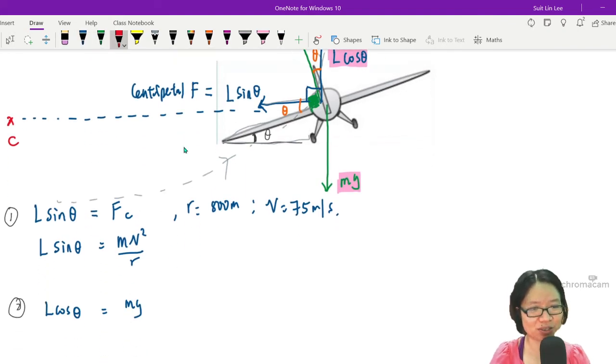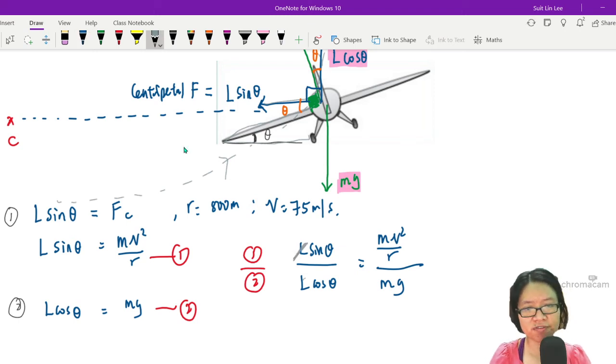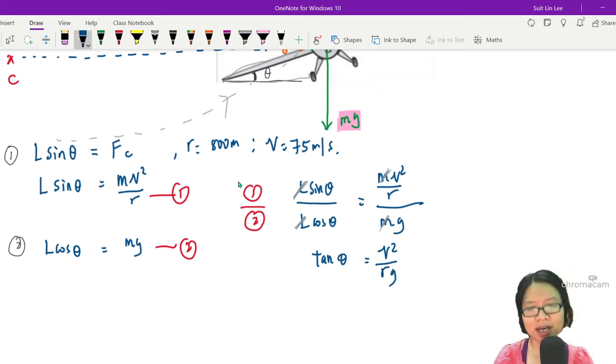Yay, equation one, equation two - familiar process by now. I'll take one divided by two. So L sine theta over L cos theta, this will be equal to mv square over r divided by mg. And the good news here is the L that you did not have cancels off, the m that you did not have also cancels off, and what you have left behind is tangent theta is equal to v squared over rg. We can calculate theta now because your speed is 75 squared and then your radius is 800 meters, gravitational acceleration 9.81.